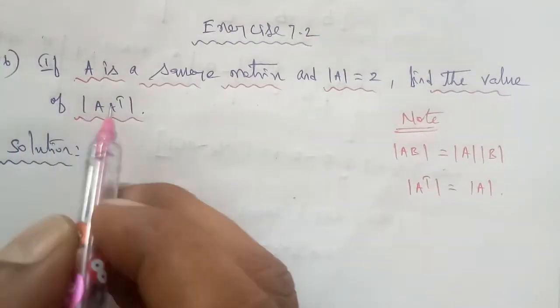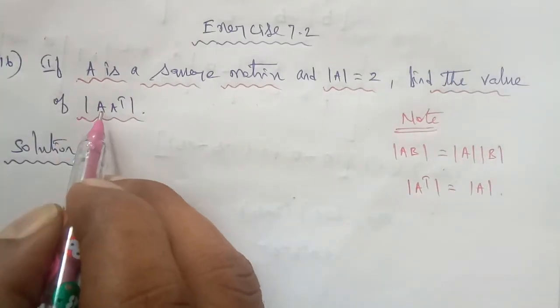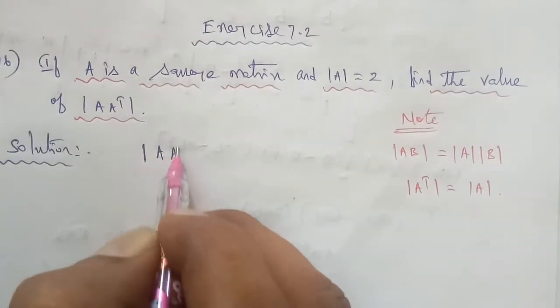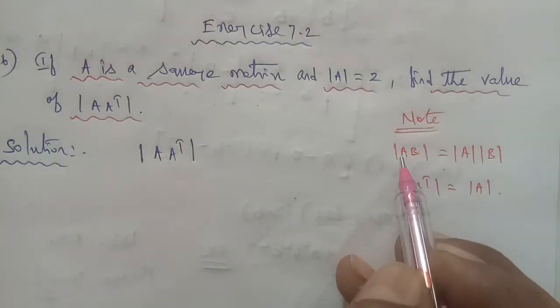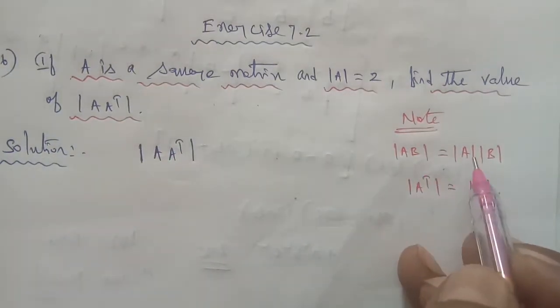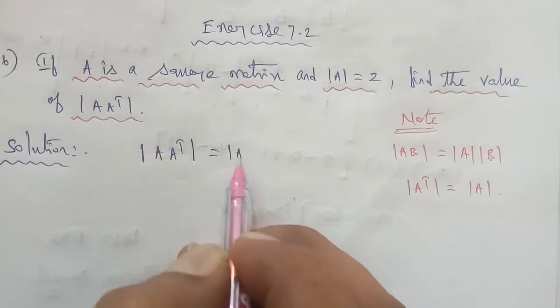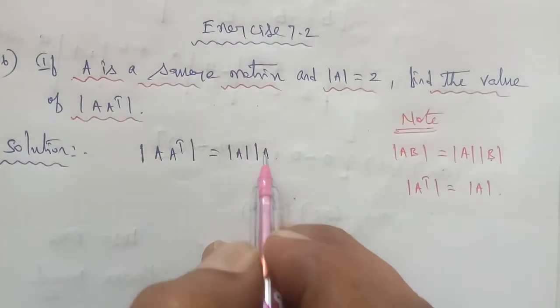Given the question, find the value of determinant of A times A transpose. Using the property, determinant of AB equals determinant of A times determinant of B, so we write determinant of A times determinant of A transpose.